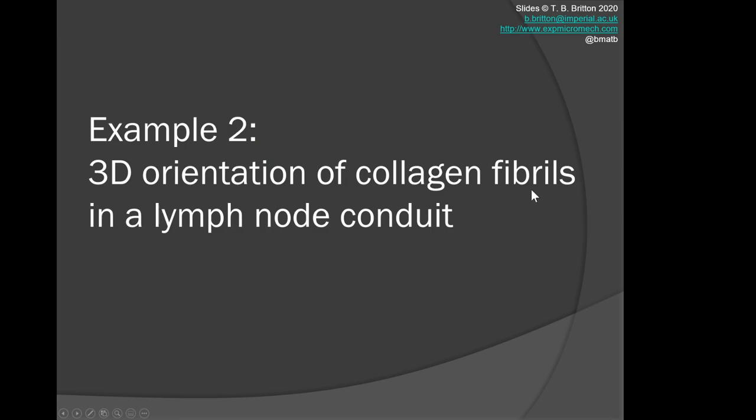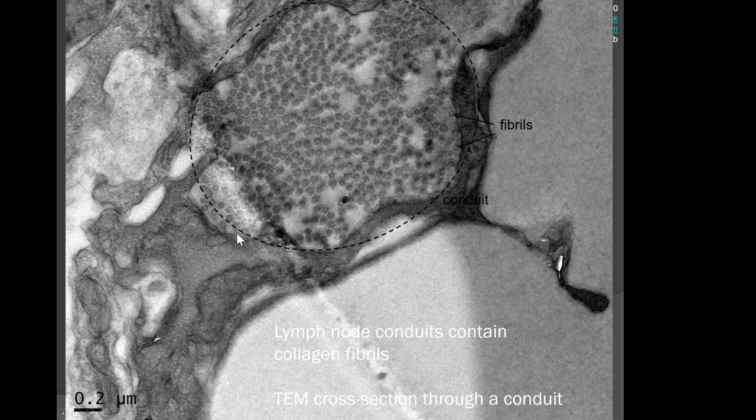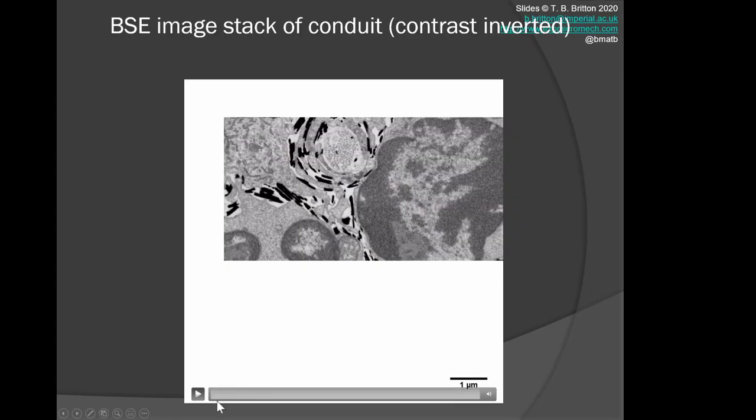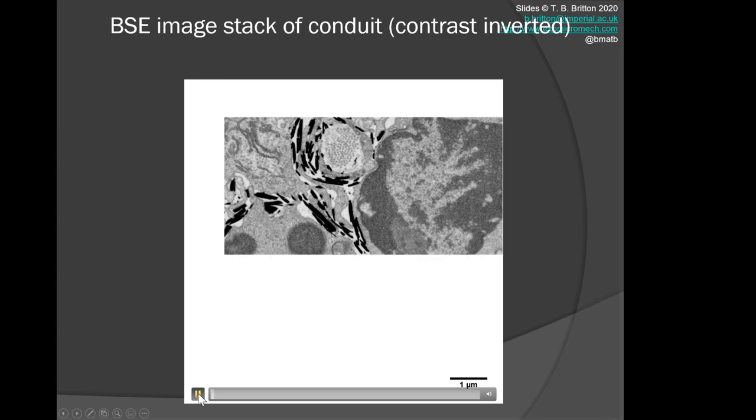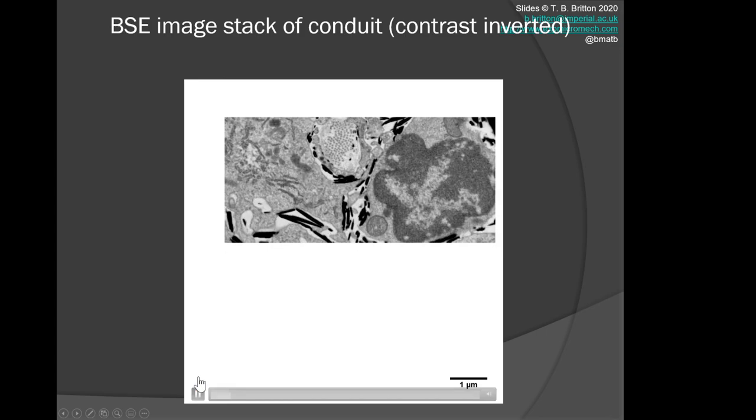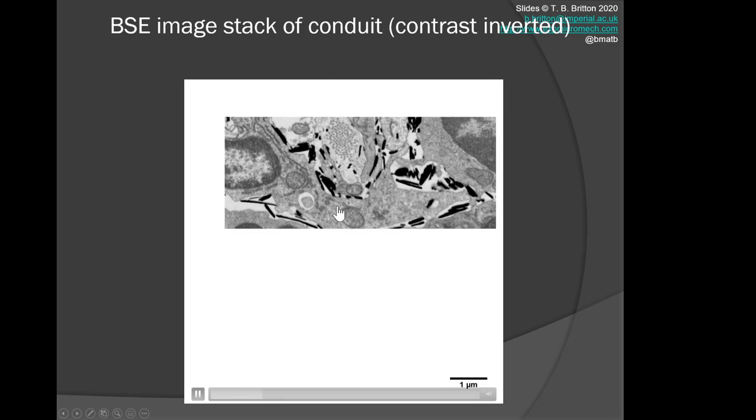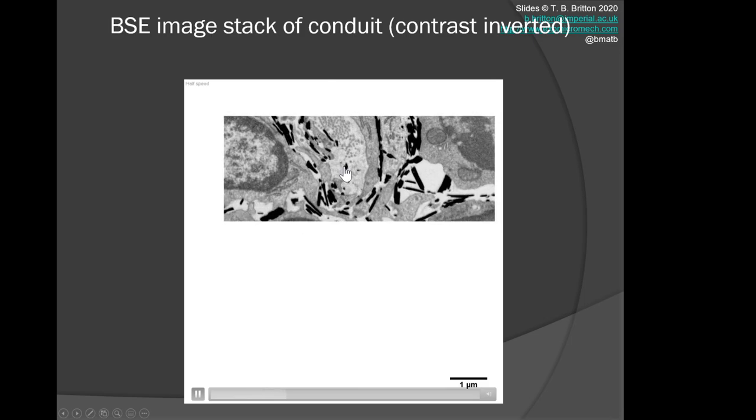A second example is looking at collagen fibrils in a lymph node. Here is an overview micrograph. In the TEM, these are the fibrils through the conduit. You've got collagen fibrils—here's the TEM cross-section. In the FIB, we've got that repeat slicing. These are the images as you slice through the stack. You can see those fibrils and these overall structures going in and out of view as you slice through the tomogram.